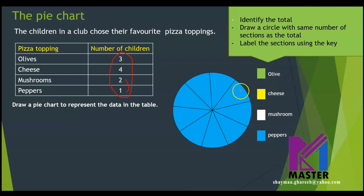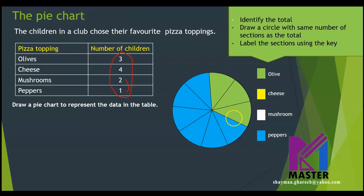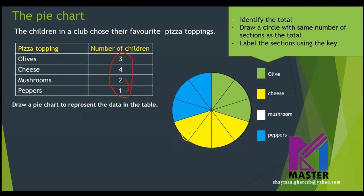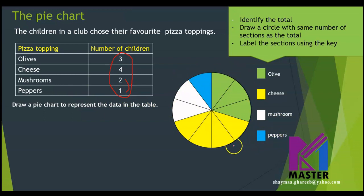Now I will start to plot the data on the pie chart. For olives, how many children prefer olives? 3. So I will color 3 parts with green — 3 out of 10 parts. What about the cheese? 4. Then I will color 4 parts of the 10 parts with yellow: 1, 2, 3, 4 parts. For the mushrooms, I will color just 2 parts with white. Now I have 2 parts out of 10 for the mushrooms and only 1 part for the peppers left to complete the total number of parts in the pie chart.